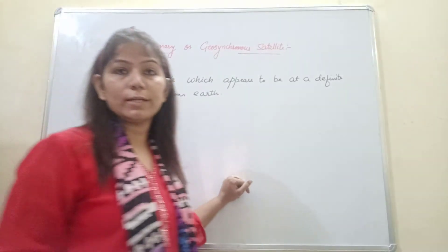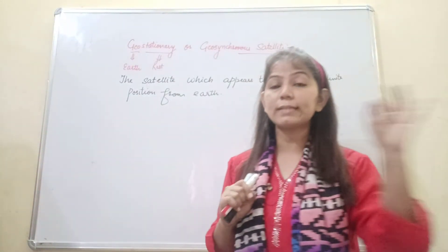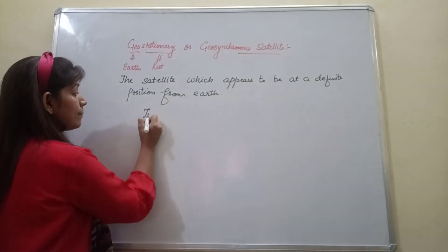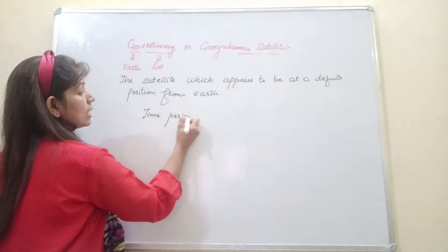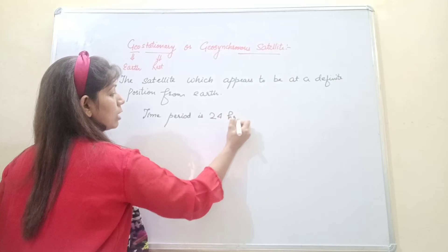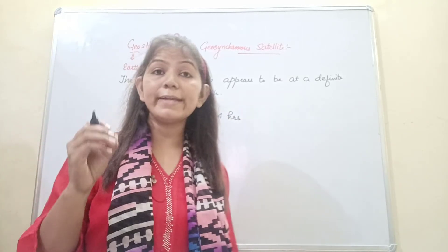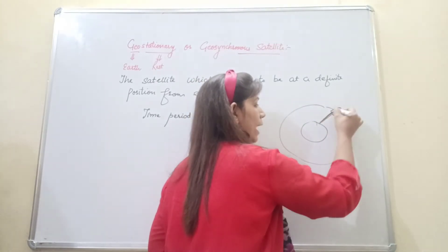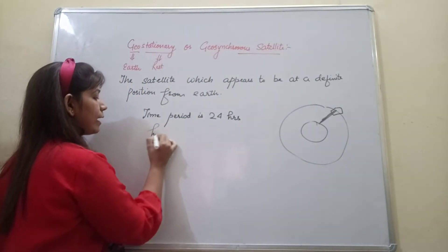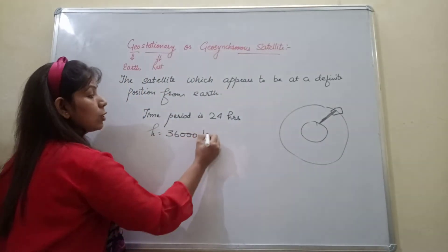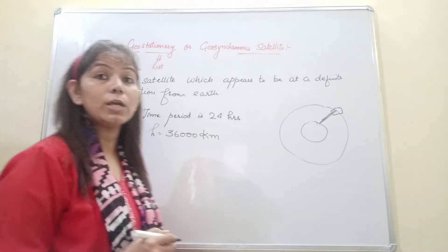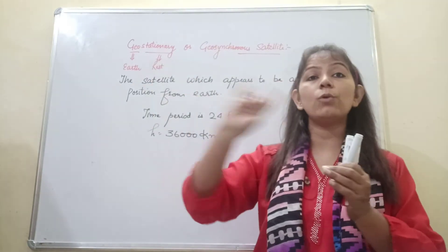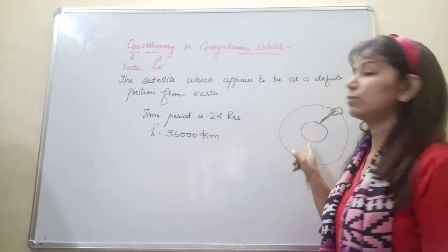The time period of a geostationary satellite revolving around Earth is 24 hours. The height of the geostationary satellite above Earth is 36,000 km. The satellite is placed so far away so that it can revolve around Earth without coming into Earth's path.